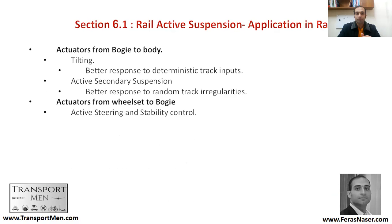There is real active suspension, and this can happen on a primary or secondary level. The secondary one can involve tilting, meaning the train will tilt on curves, which allows it to move up to 40% faster. This gives a great response to deterministic track inputs — inputs we already know about, like curve locations — helping the train go faster through curves. Active secondary suspension also provides better response to random track irregularities, such as a defect or track over a poor substructure, and the train adjusts its suspension response accordingly.